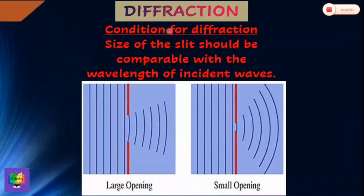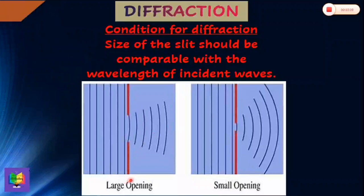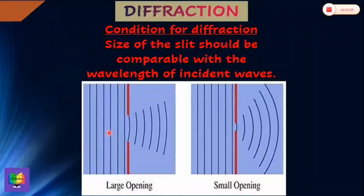The condition for diffraction to take place is that the size of the opening should be comparable with the wavelength of the incident wave. In the first case, the opening is large, so diffraction effects are very minimal because the width of the gap is very large compared to the wavelength. In the second case, the width of the opening is comparable with the wavelength, so diffraction effects produced are more significant.